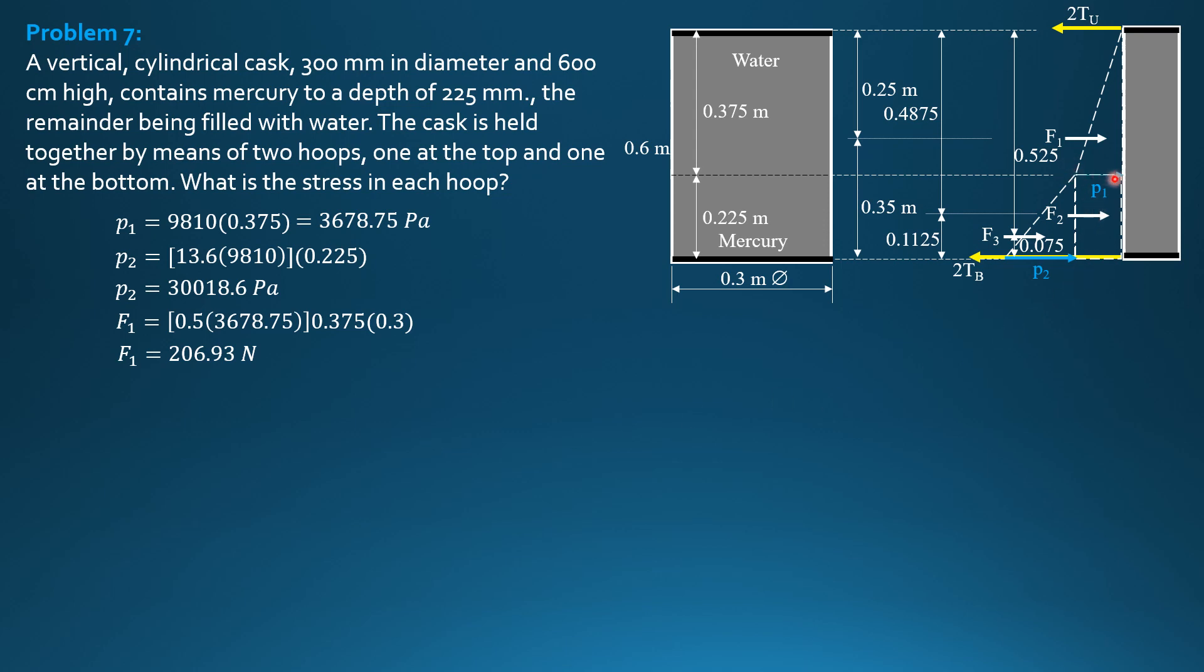F2 is this rectangular pressure diagram, so it is P1 times 0.225 times 0.3. 3678.75 times 0.225 times perpendicular to the board, the diameter, 0.3, or perpendicular to the screen. So 248.32 newtons, F2.